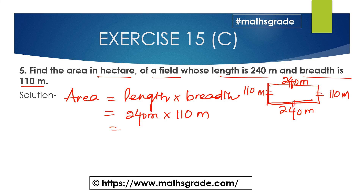This is the fastest trick using Vedic math — how to multiply any number by 11. First, write down the first digit, which is 2, and the last digit, which is 4. Then add the first and last digits: 2 plus 4 equals 6. Write 6 in the middle.